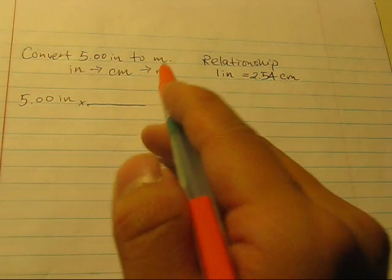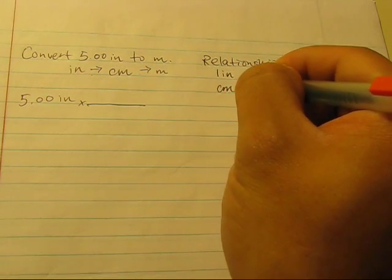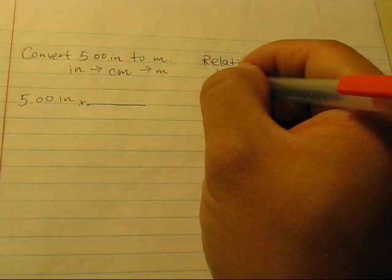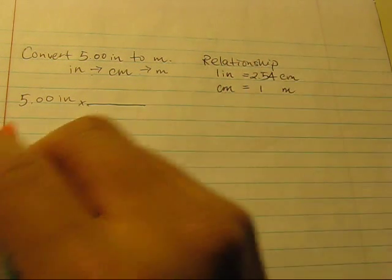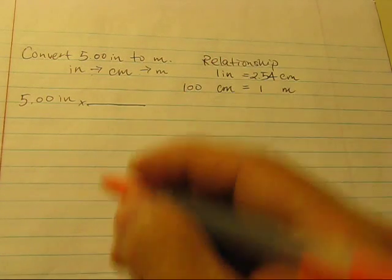What about the second relationship? The second relationship is going to be between centimeters and meters. And we also know that one meter is equal to 100 centimeters.